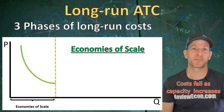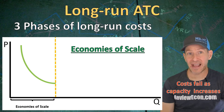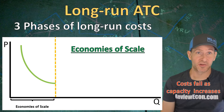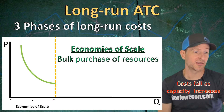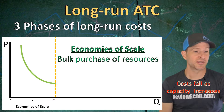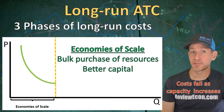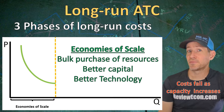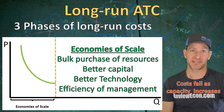The business is scaling up its production ability, and average costs are falling. That happens because as businesses grow, they are able to get bulk prices on resources, they are able to gain better capital equipment, and improve technology of production. Also, management tends to get more efficient as capacity increases.